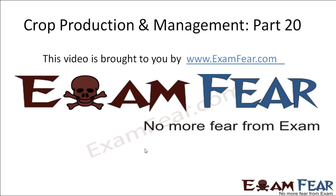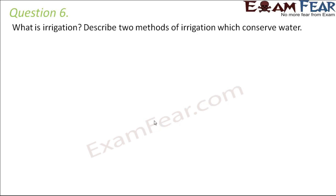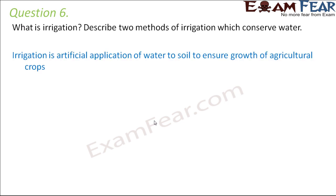Hello friends, this video on crop production and management is brought to you by examfear.com. Question number six: what is irrigation? Describe two methods of irrigation which conserve water. Irrigation is the artificial application of water to soil to ensure growth of agricultural crops — basically, instead of completely depending on rain, we artificially apply water.